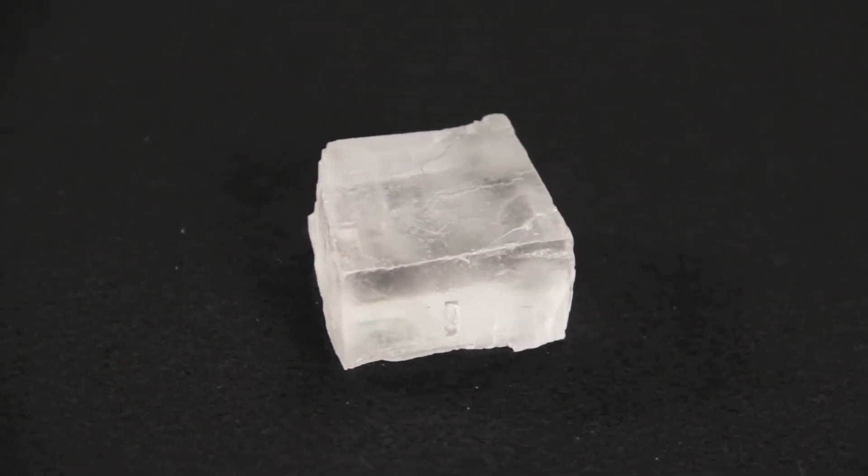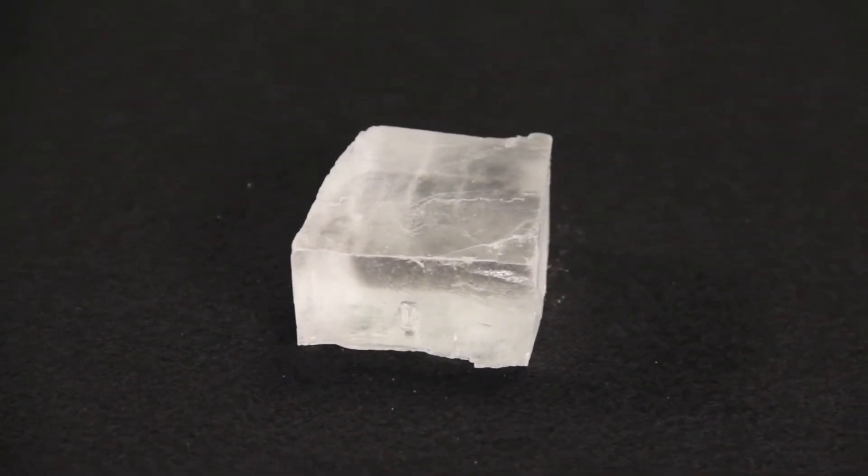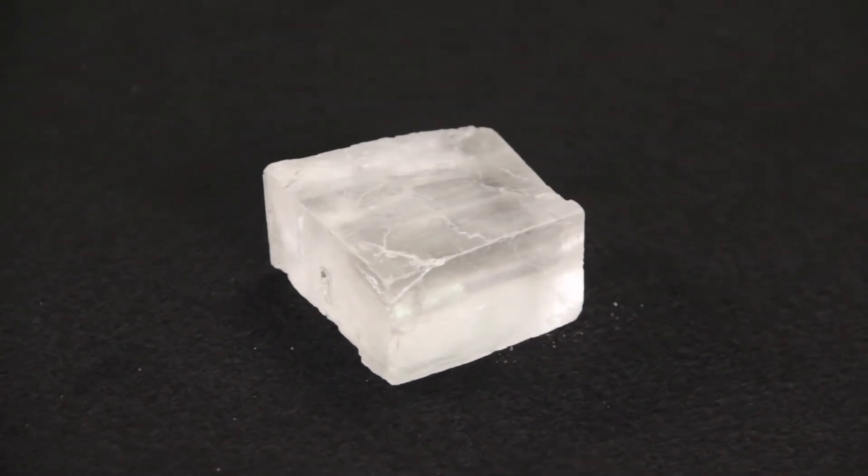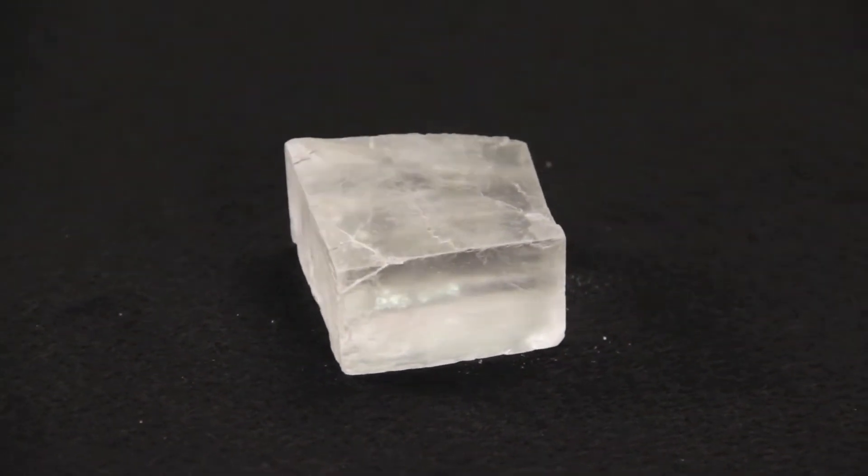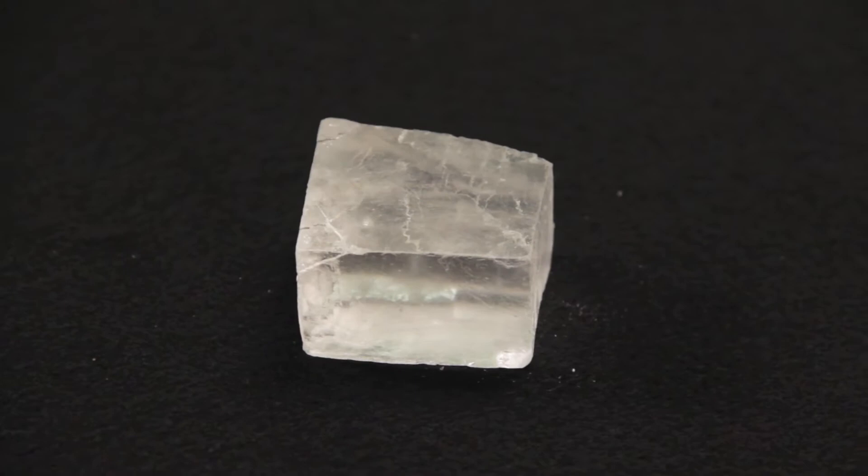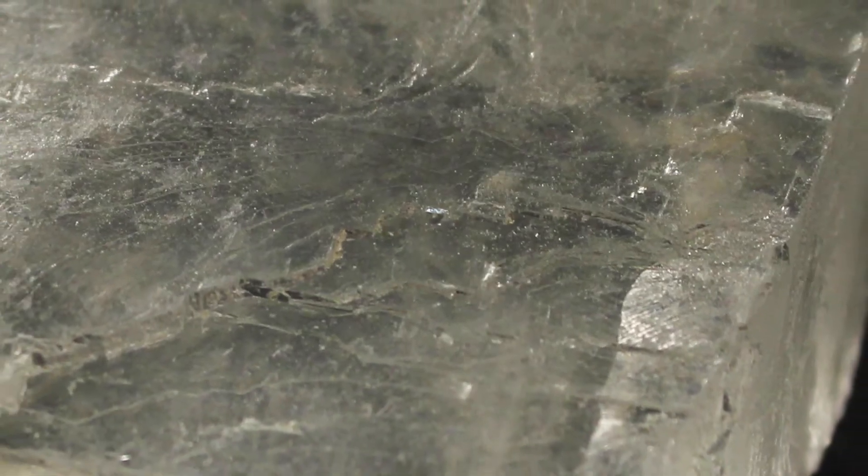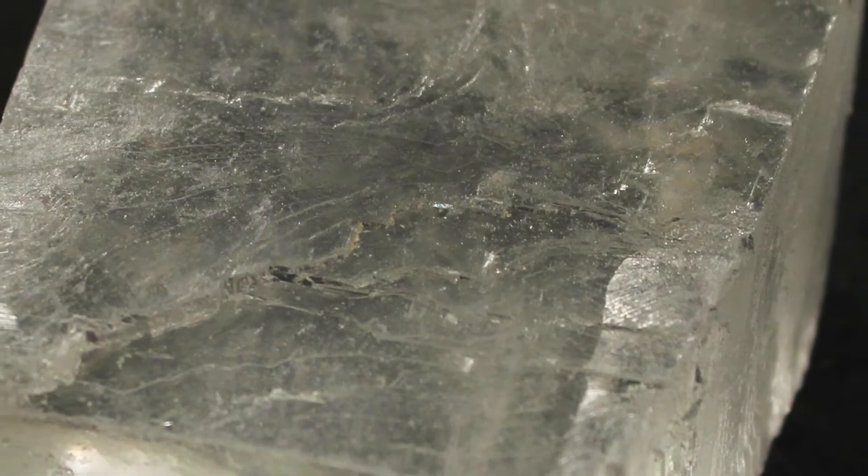If we examine any ordinary sample of halite, we will always find several flat cleavage surfaces. A very important thing to notice about these cleavage surfaces is that when they intersect, they do so at 90 degree angles. These intersections give halite a tendency to form cubic or rectangular shapes.